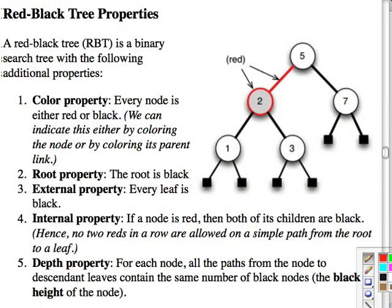Red-black trees are binary search trees with some additional properties. They're called red-black trees because each node has a color — we use one bit of information to mark a node as either red or black. In diagrams, we might indicate it by coloring the node or the edge red. The root property is that the root is always black.